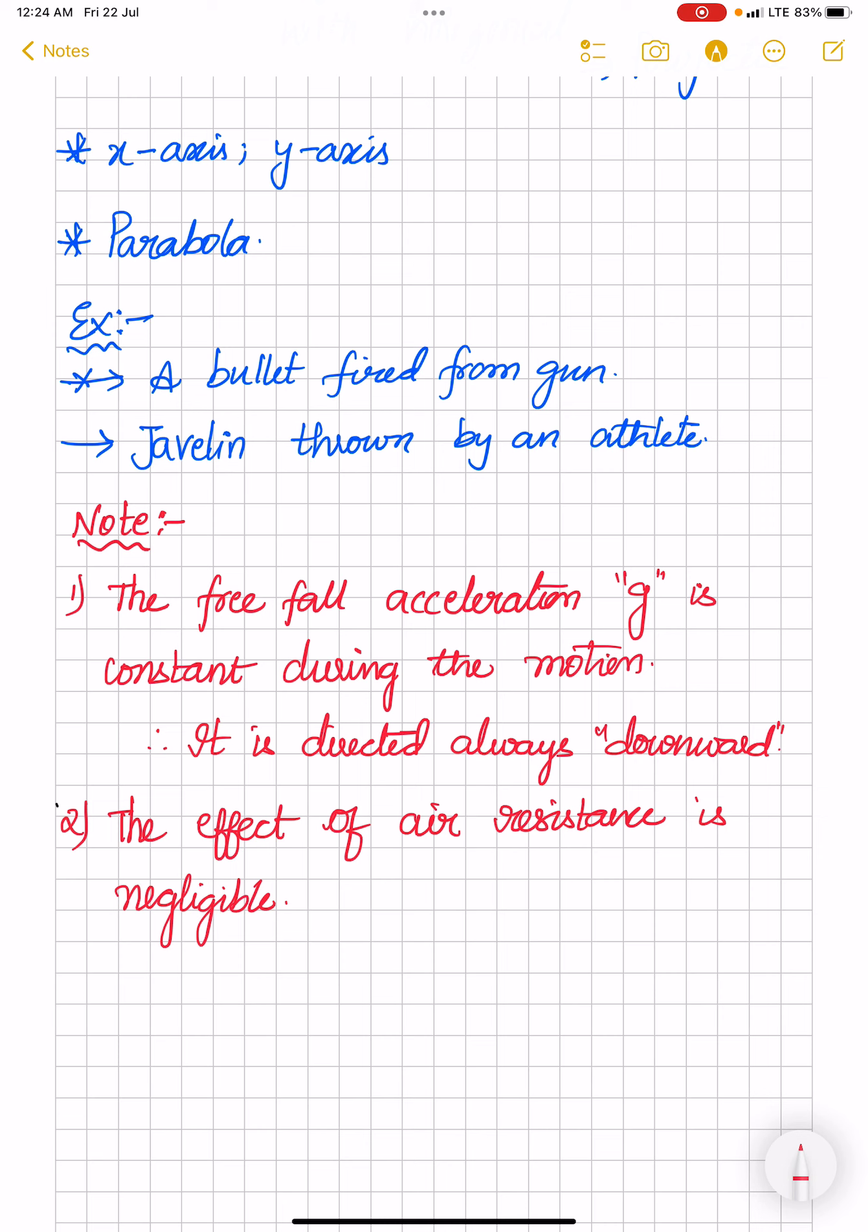And see, under these assumptions only, the projectile will be having a path, and that path of the projectile we consider as a parabola. So path of projectile will be parabola when under these assumptions. So if you consider a projectile motion under these assumptions, then the path of that projectile will be a parabola.